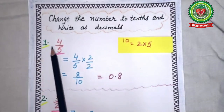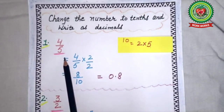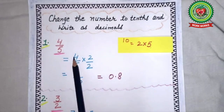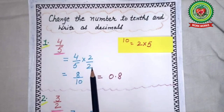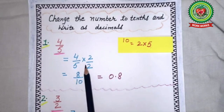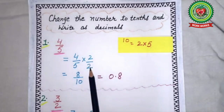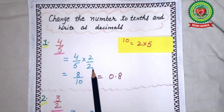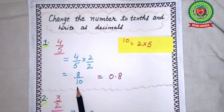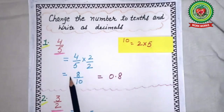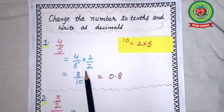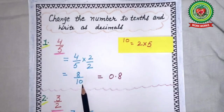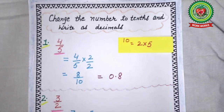The first sum is 4 upon 5. What is the denominator? 5. So we will multiply it by 2: 4/5 × 2/2. 4 × 2 = 8, 5 × 2 = 10. Now it is 8 upon 10, and this term is now in tenths because the denominator is 10.